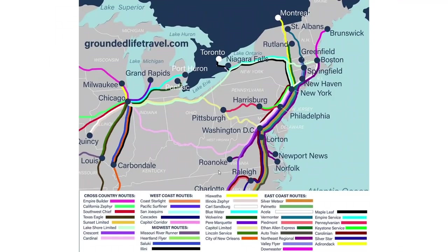On the east coast, you have a lot more options because so many trains connect through DC, Chicago, and New York. For example, the Cardinal and the Lakeshore Limited — which goes to both New York and Boston from Chicago — let you make a loop and spend time traveling up and down the east coast.